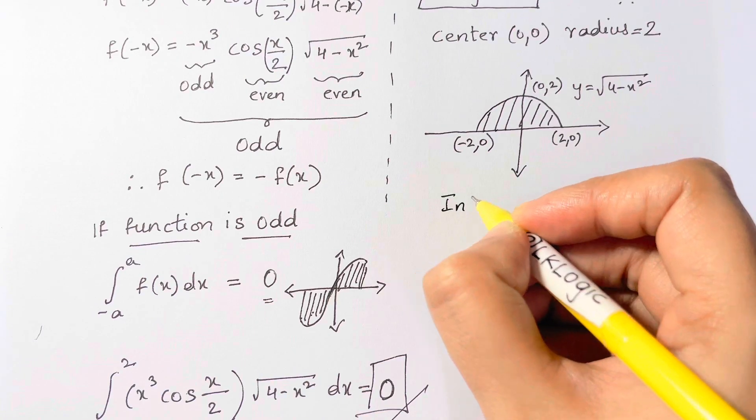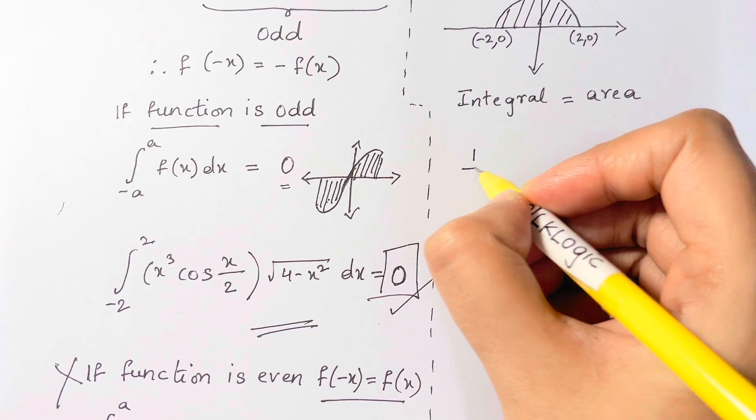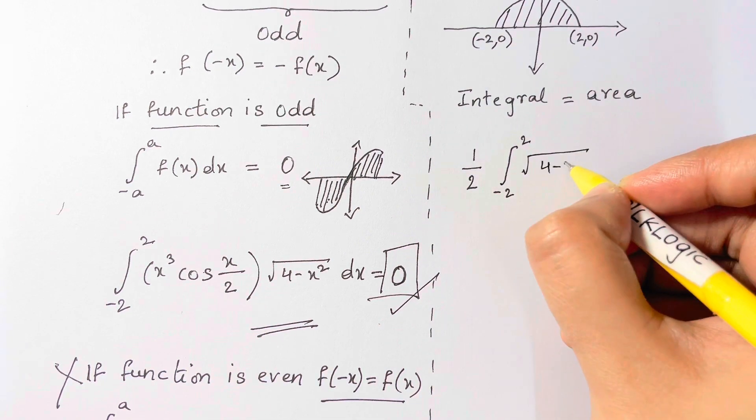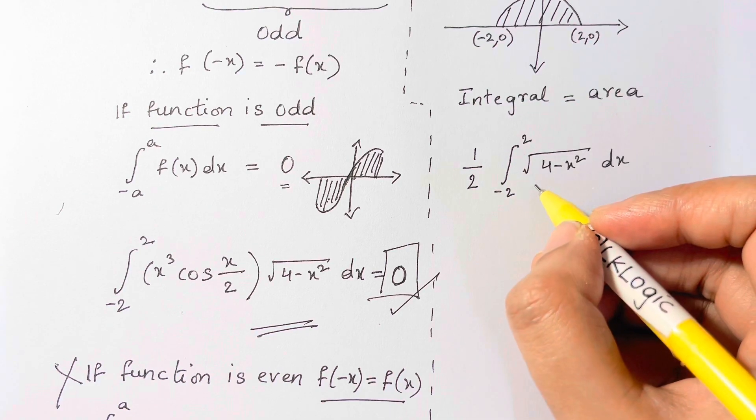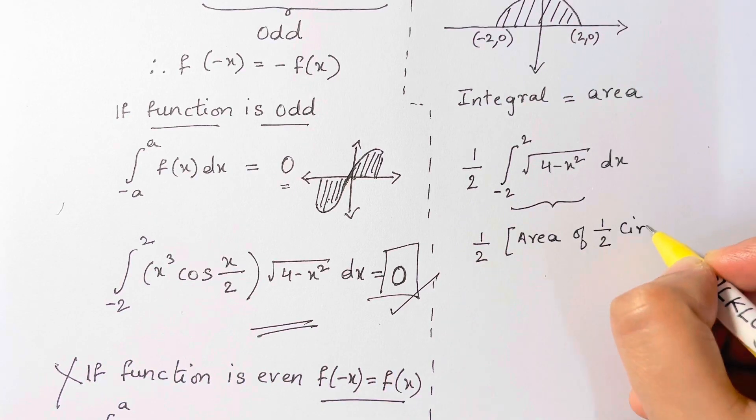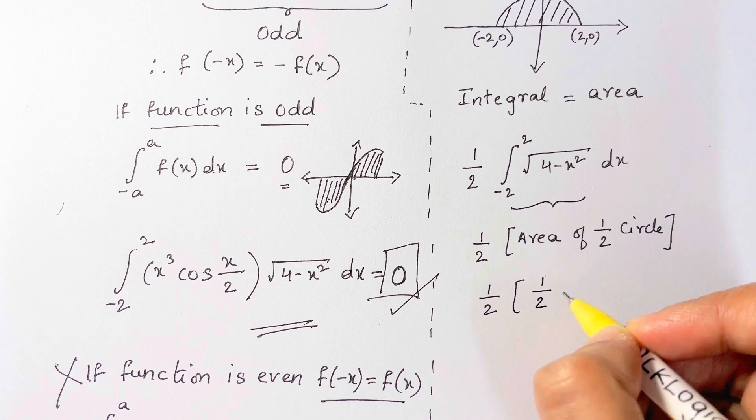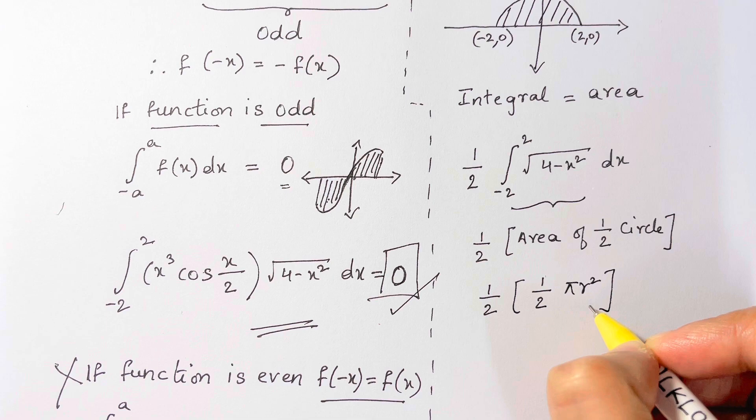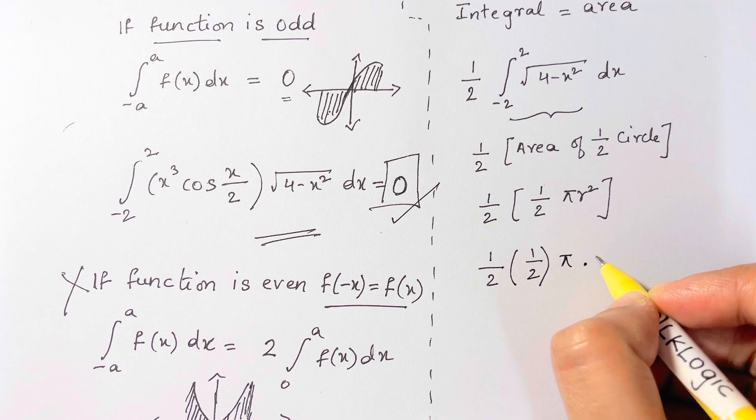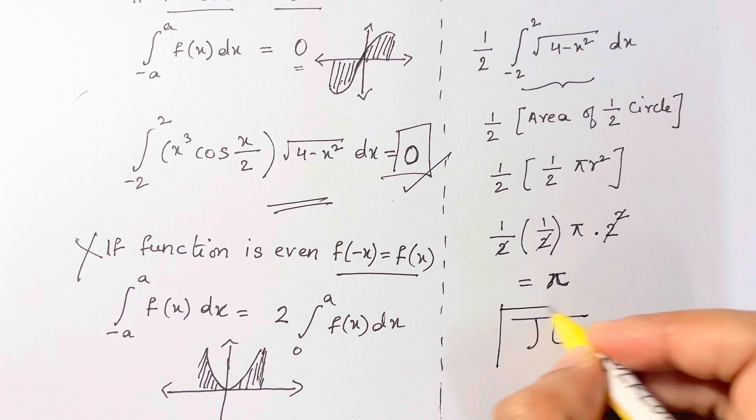We want to calculate the area under here, and then we want to take half of the area. Therefore the integral equals the area, so we have 1/2 ∫ from -2 to 2 of √(4 - x²), and that integral is the area of a semicircle. Half of the circle: 1/2 times area of circle, which is πr². And half of that because it's a semicircle: 1/2 πr². Let's substitute the radius, which is 2. So 1/2 × 1/2 × π × 2². Two and two cancel with 2², we get π.